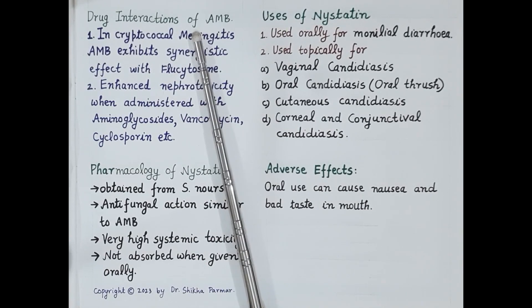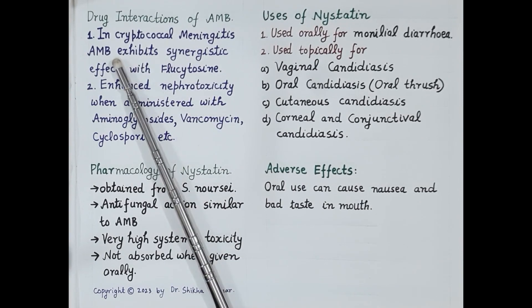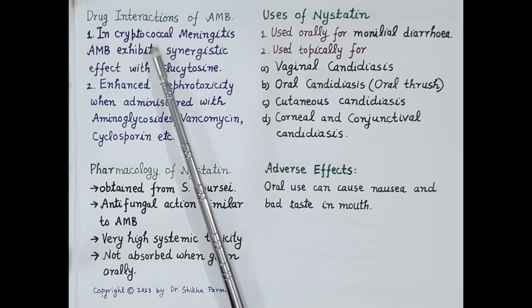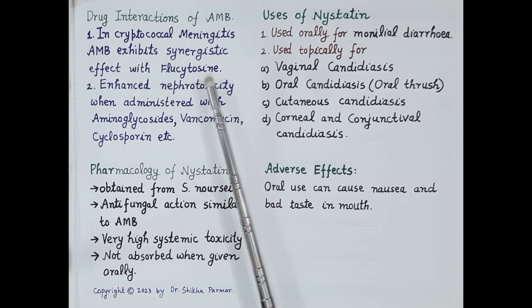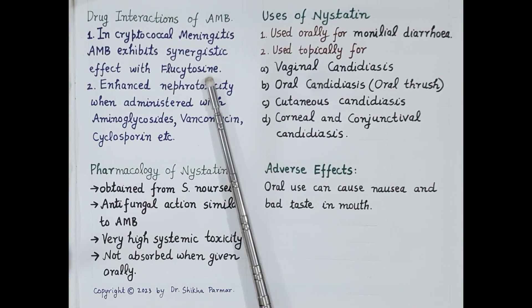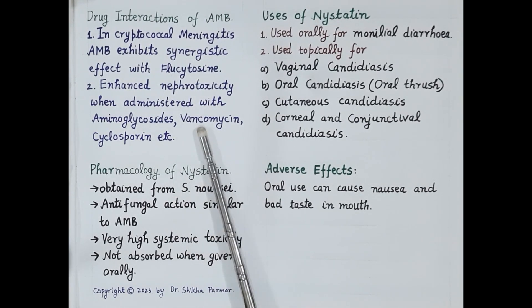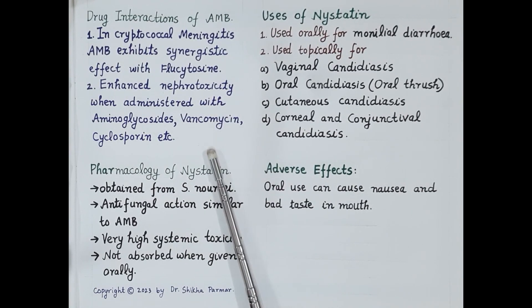Regarding drug interactions: flucytosine is an antifungal drug that inhibits synthesis of fungal DNA and RNA. Since amphotericin B forms micropores in the fungal cell membrane, it facilitates the entry of flucytosine inside the fungal cell. In the treatment of cryptococcal meningitis, amphotericin B is used with flucytosine for a synergistic effect. Nephrotoxicity of amphotericin B is enhanced when co-administered with other nephrotoxic drugs like aminoglycosides, vancomycin, or cyclosporine.